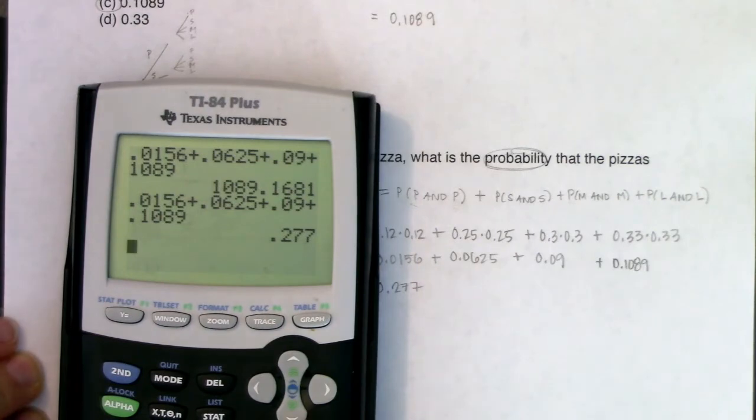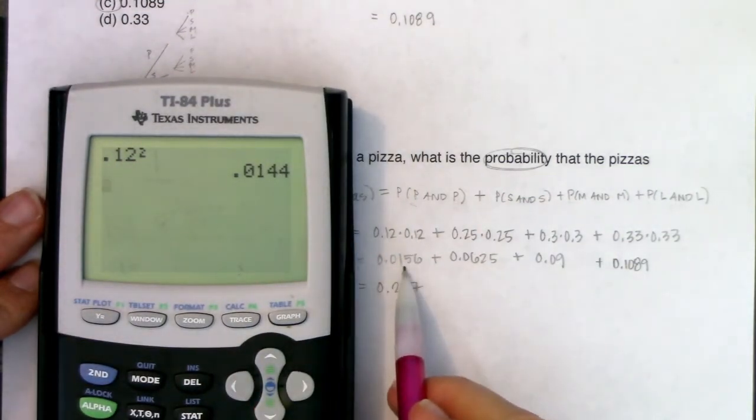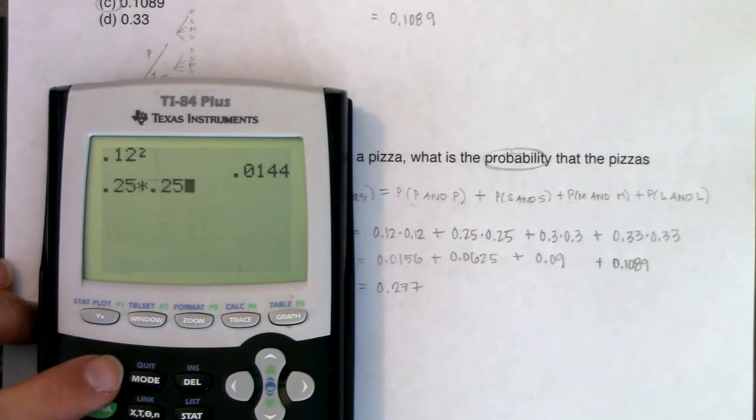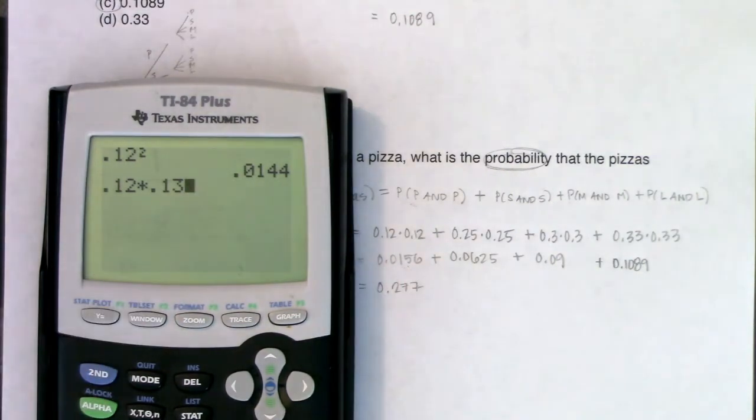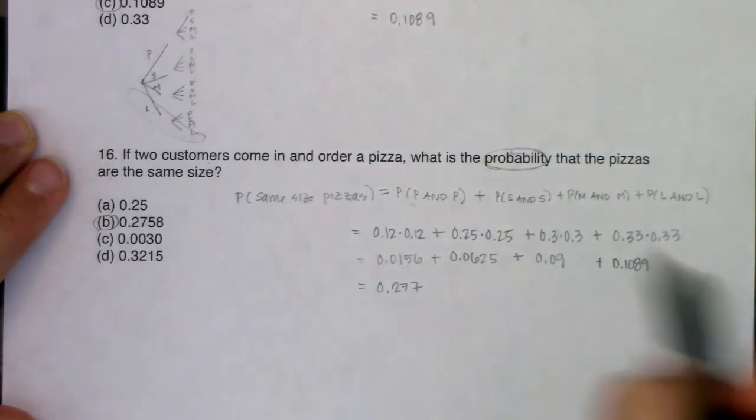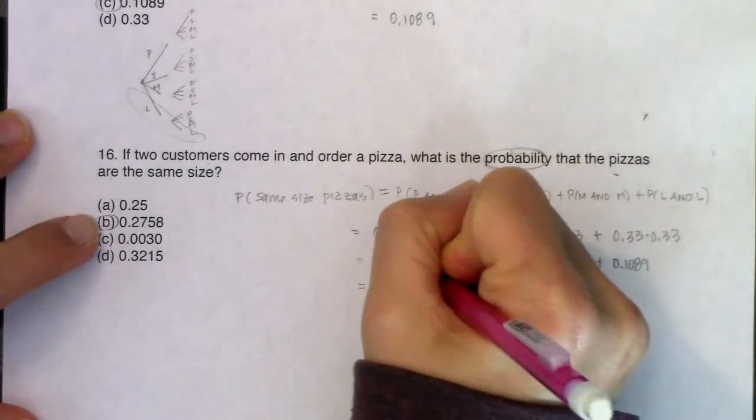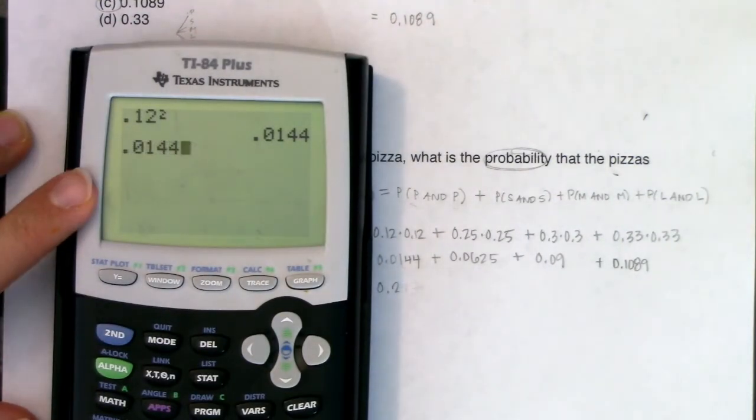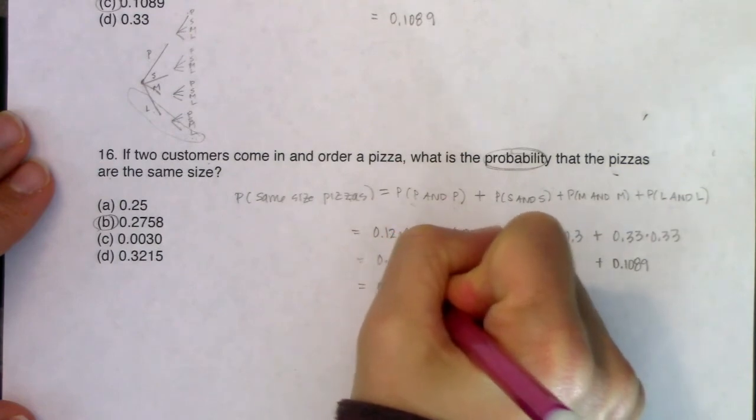Ah, there it is. When I did 0.12 times 0.12, I should have gotten 0.0144, but I got 0.0156. Let me see what I typed in before—I did 0.12 times 0.13, that led to this typo. Let me go back and fix this: it should have been 0.0144. It's not always that I have to get the exact answer, but this one seemed a little odd to me that it didn't match exactly. Now we'll do 0.0144, 0.0625, 0.09, and 0.1089, and now we're getting 0.2758. That's looking like the exact answer I want, and that's great.